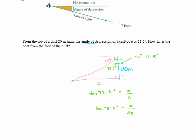And what I need to do now is I'm just going to multiply both sides by 20. So these 20s here cross out so I'm left with x equals 20 times tan 78.5.